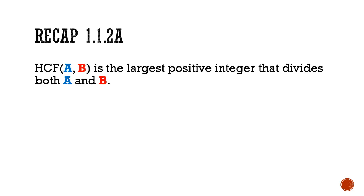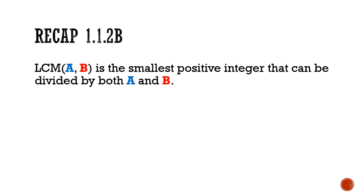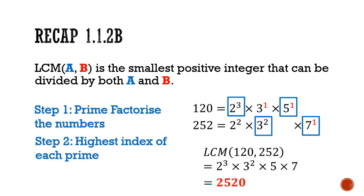In part 2, we learned that the highest common factor of two numbers is the largest positive integer that divides both numbers. We went through the two steps of finding the HCF: first prime factorize the numbers, then select the lowest index of each prime. Similarly, the lowest common multiple is the smallest positive integer that can be divided by both numbers, using the highest index of each prime.